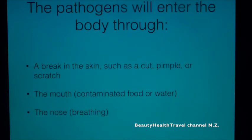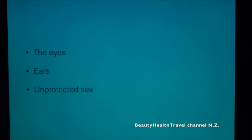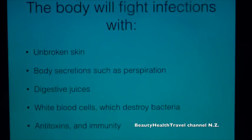Pathogens can enter the body through a break in the skin such as a cut, pimple, or scratch; through the mouth via contaminated food or water; through the nose by breathing; and through the eyes, ears, or unprotected sex. The body fights infections with unbroken skin, body secretions such as perspiration and digestive juices, white blood cells which destroy bacteria, anti-toxins, and immunity.